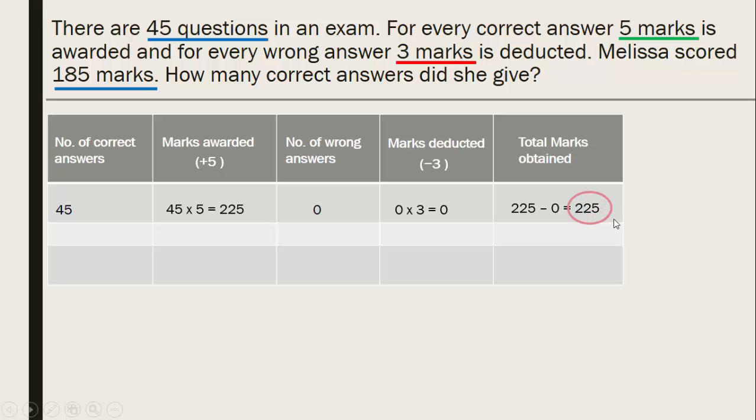Now, let's assume that number of wrong answers is 1. Meaning, Melissa, the first case was Melissa got all the questions correctly. But now, she has made one mistake. What happens because of this one mistake? That's what you are going to figure out. If she has made one mistake, that means the number of correct answers would go down by 1 and it will become 44. And for 44, she's going to get 5 marks for each of the 44 questions. So she gets 220.